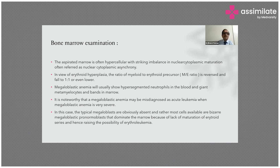Megaloblastic anemia may be misdiagnosed as acute leukemia when it is very severe. In this case, typical megaloblasts may be absent. Instead, most cells are bizarre megaloblastic pronormoblasts dominating the marrow due to lack of maturation of the erythroid series, hence raising the possibility of erythroleukemia.